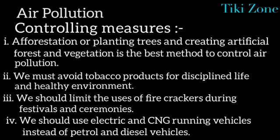To control air pollution, the most important measure is planting trees — called afforestation — and creating artificial forests or vegetation; this is the best method to control air pollution. We must also avoid tobacco products for a disciplined and healthy life. We should limit the use of firecrackers during festivals and ceremonies, and use electric and CNG running vehicles instead of petrol and diesel vehicles.